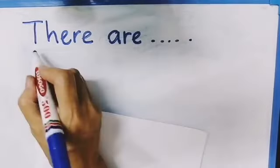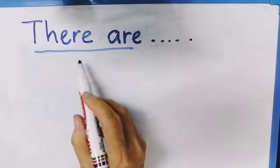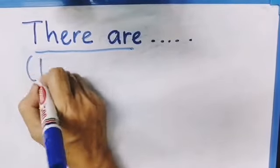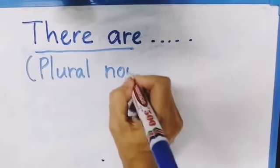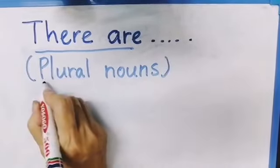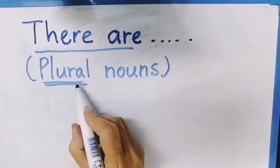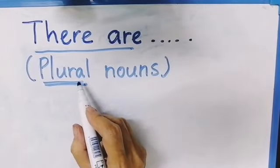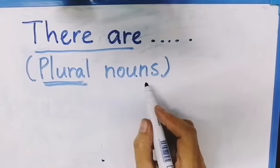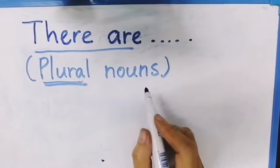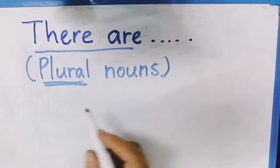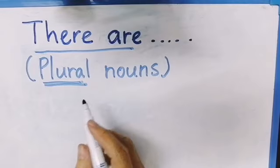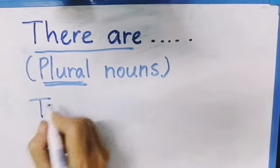Now, let's look at the second phrase: 'There are'. We use 'there are' with plural nouns. Plural here means more than one — 'lebih daripada satu'. And remember, the nouns here can be people, animals, objects, places, or anything else. An example of a sentence with plural nouns: begin your sentence with 'There are'.